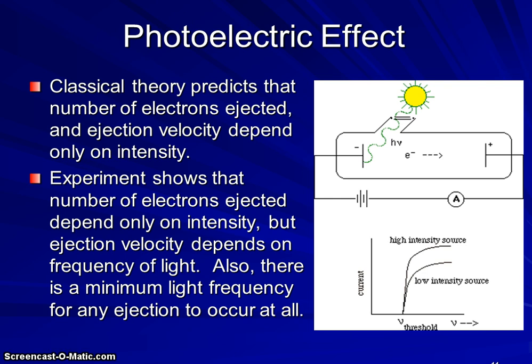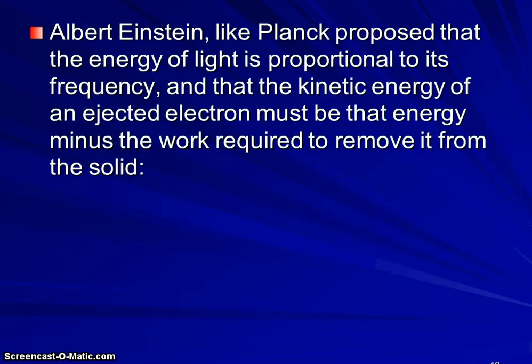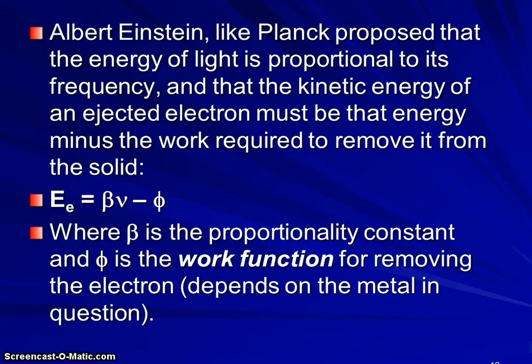So what Albert Einstein did was propose that the energy of light is proportional to its frequency, and that the kinetic energy of an ejected electron must be that energy minus whatever work is required to remove it from the solid. So he set up this idea: the kinetic energy of an ejected electron is equal to some constant times ν minus the ionization energy of the metal, basically what we call the work function.